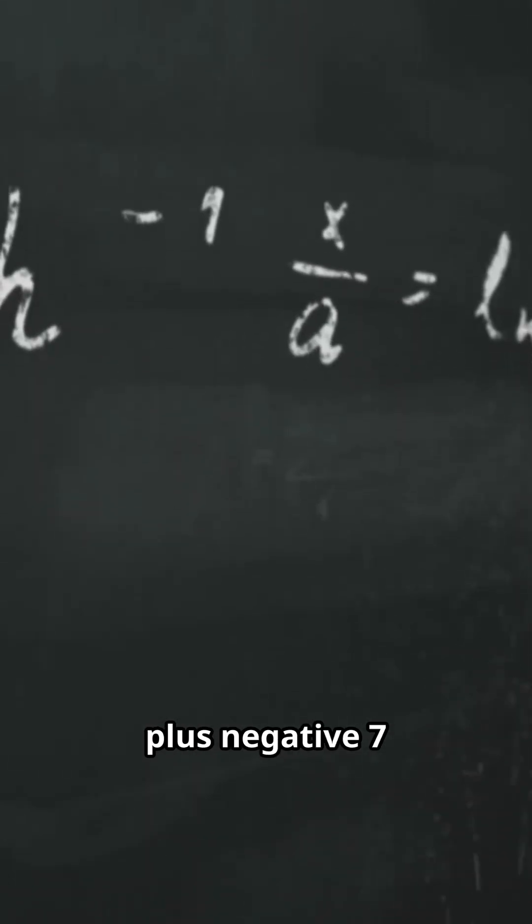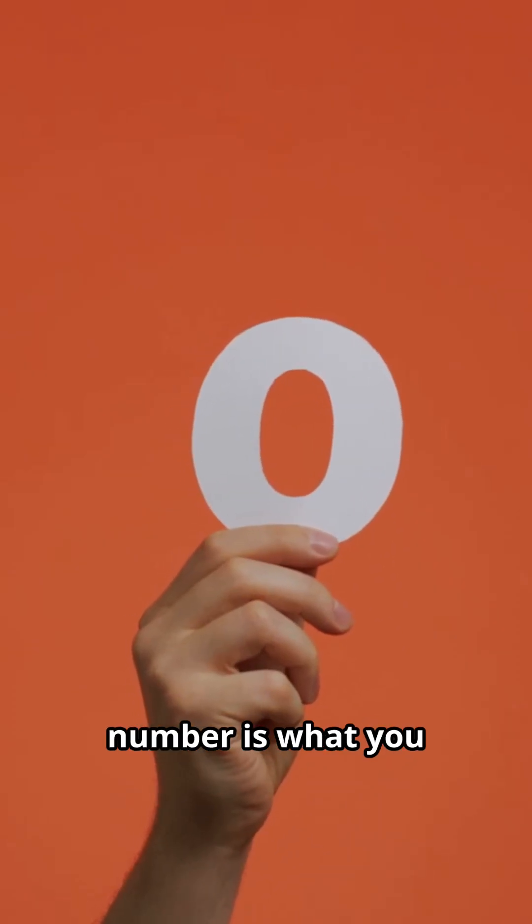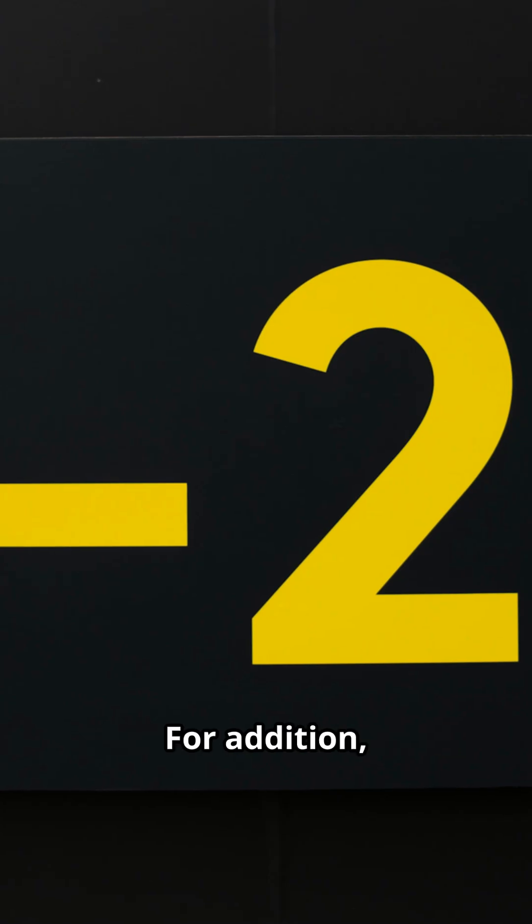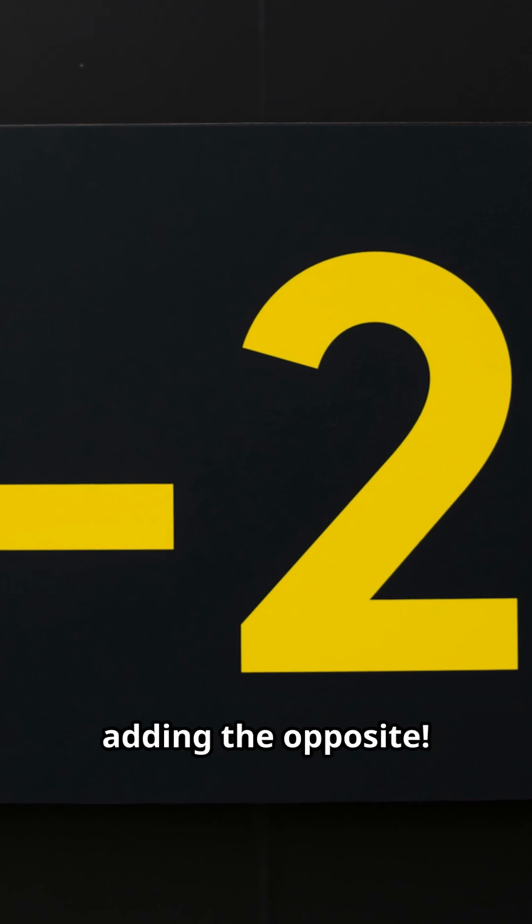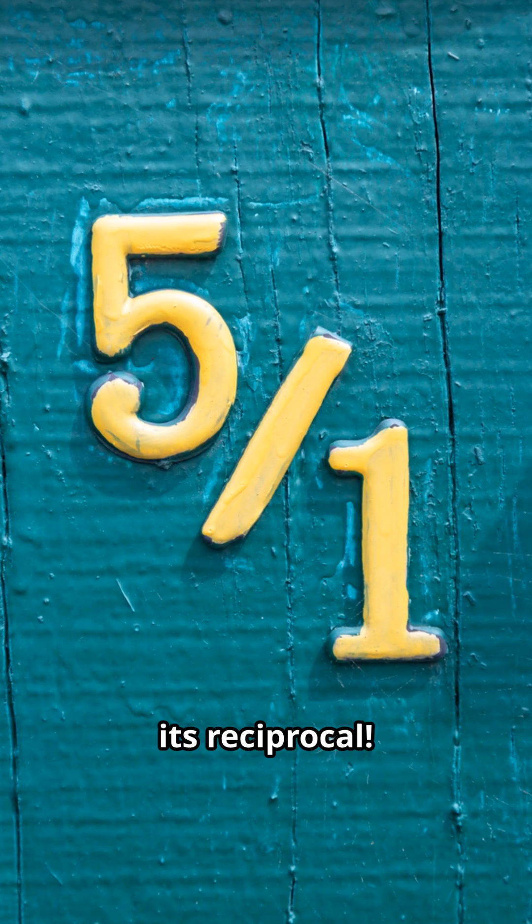That's because 7 plus negative 7 equals 0. The inverse of a number is what you add to get back to 0. For addition, the inverse is adding the opposite. For multiplication, it's multiplying by its reciprocal.